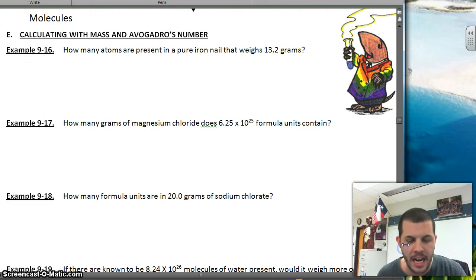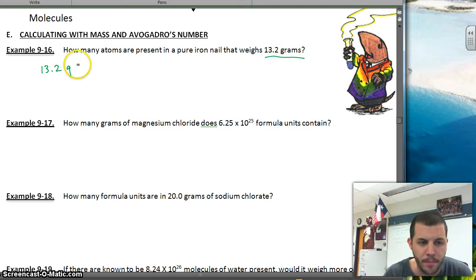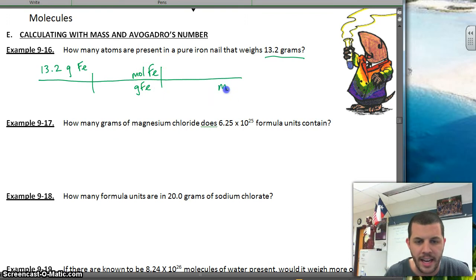Now, there is not a conversion that allows me to go from grams straight to atoms. So what we have to do is we have to go through the mole. So I'm going to use my same strategy as what I've been doing this whole time. I'm going to take my given and I'm going to put it at the top left of my T chart. So I've got 13.2 grams of iron and I want to find out how many atoms of iron that is. So I'm going to go from grams of iron to moles of iron and then from moles of iron, now I can take that to atoms of iron.